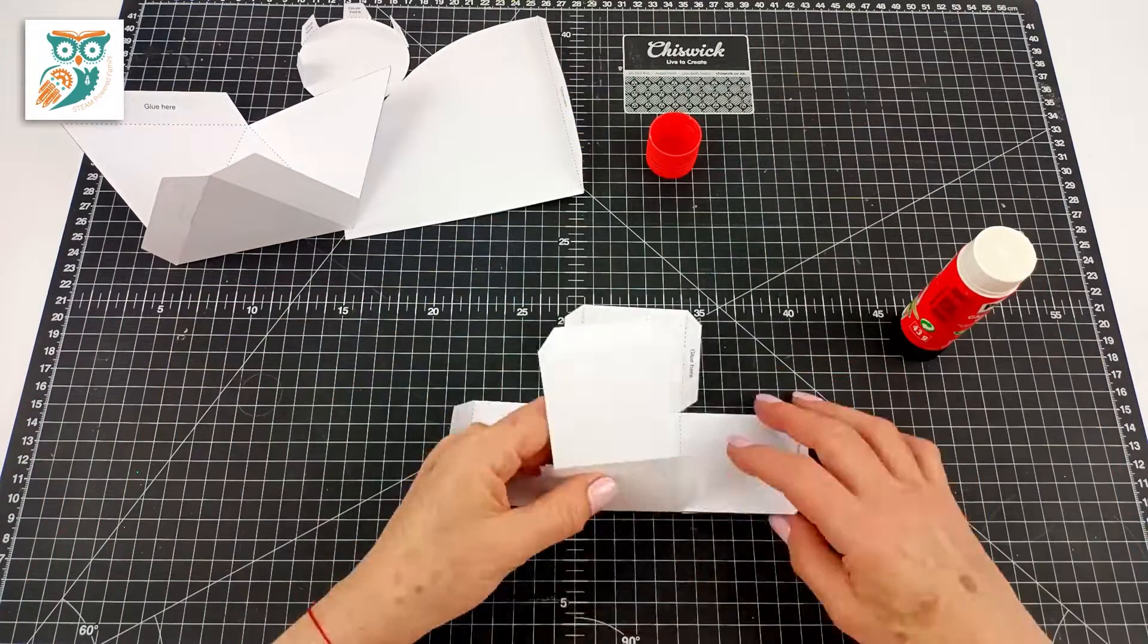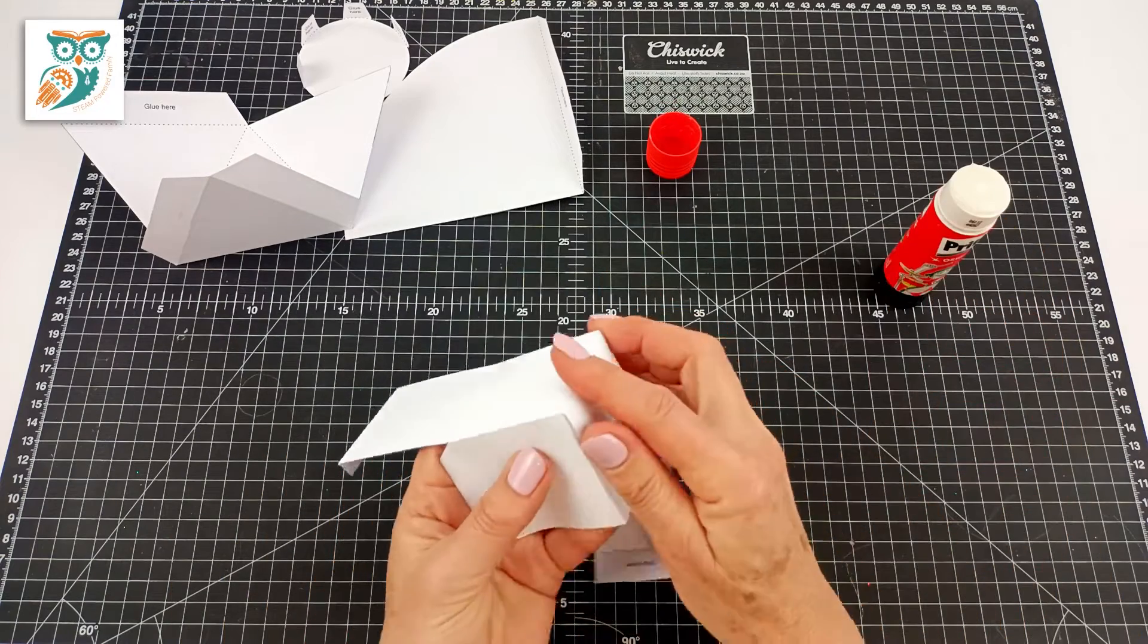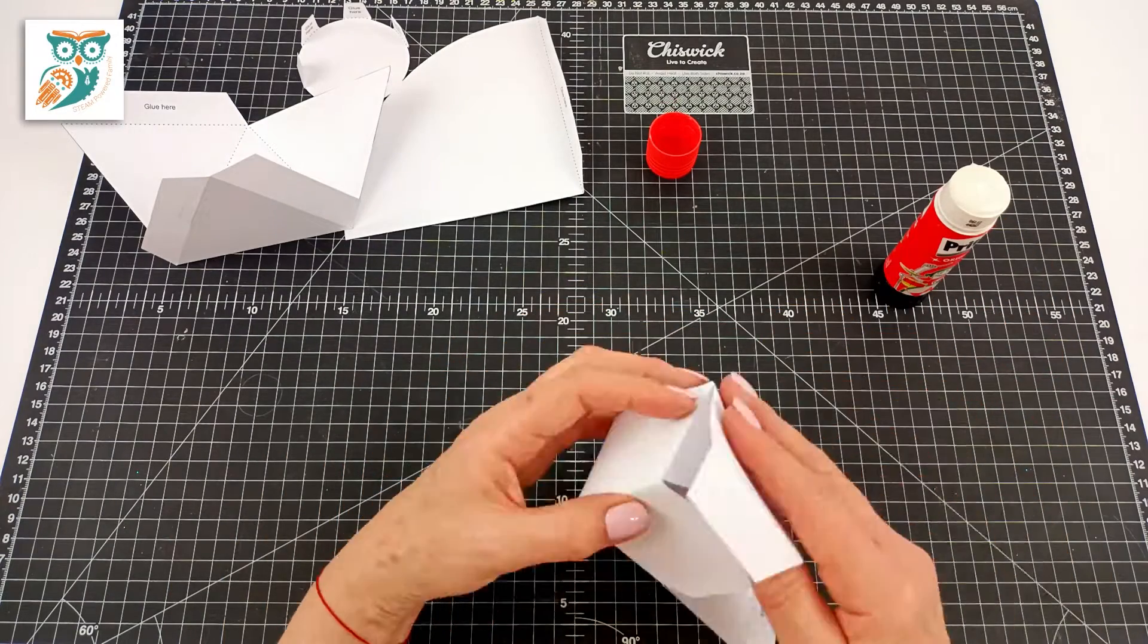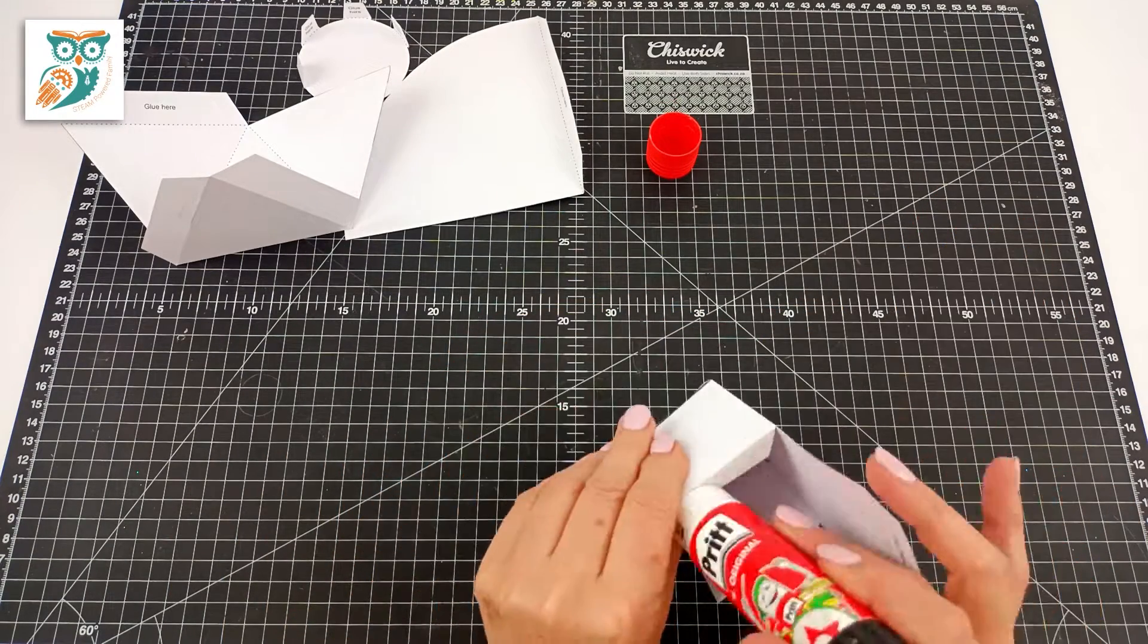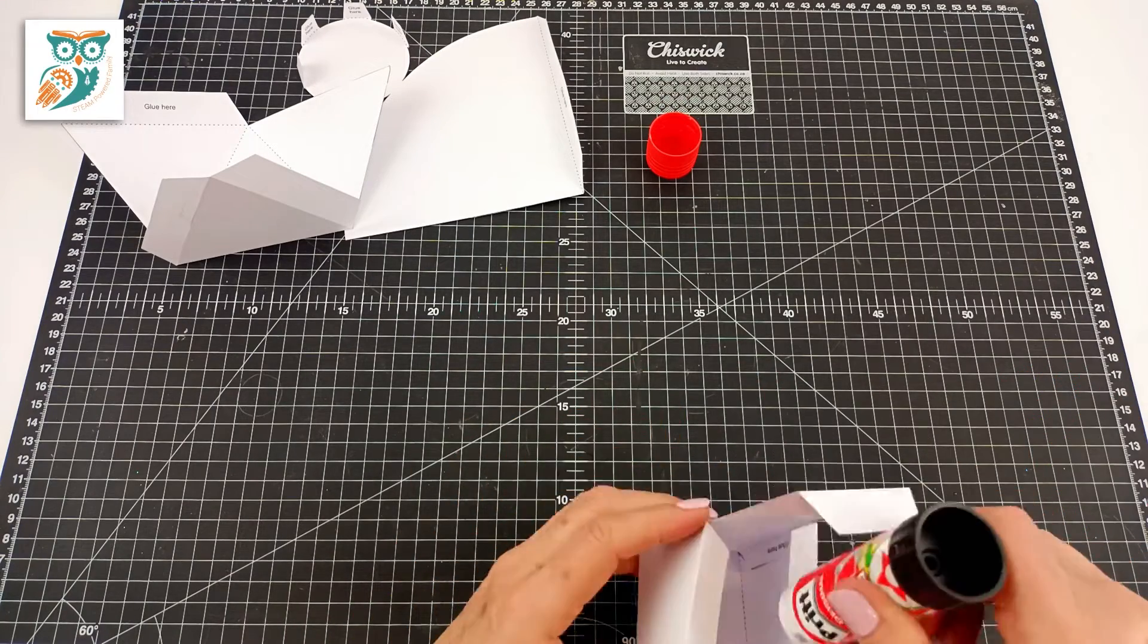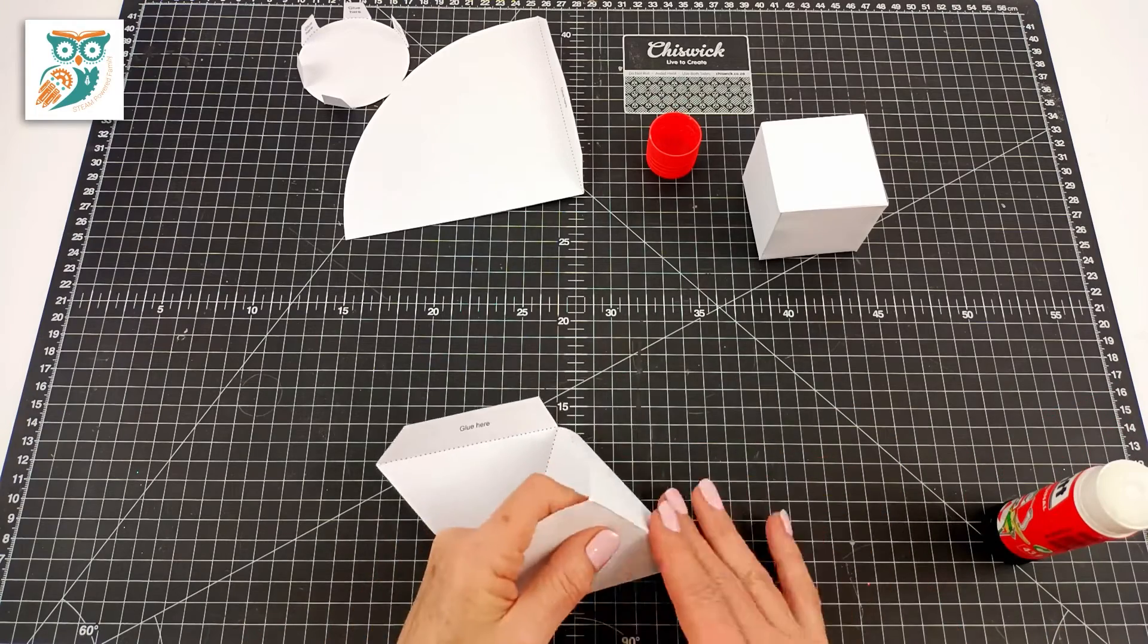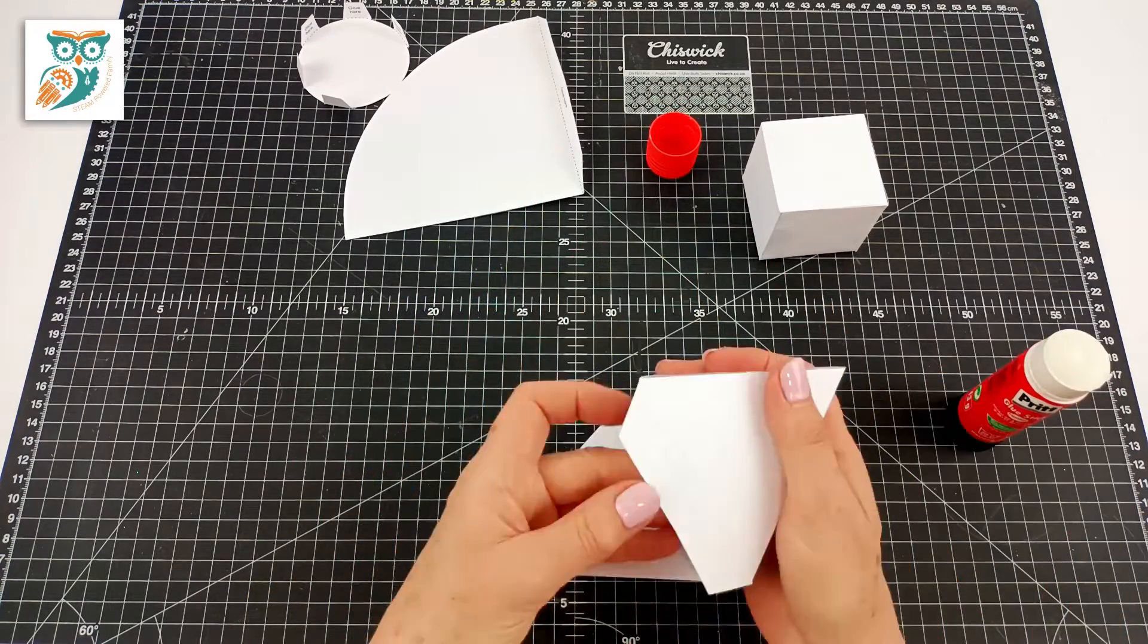Now we're going to add some glue where it indicates on the printable to add the glue and we're going to glue our shapes together. So here we're putting together our cubes and those make great little Christmas present shapes. And now we're going to make our triangular pyramid or tetrahedron.